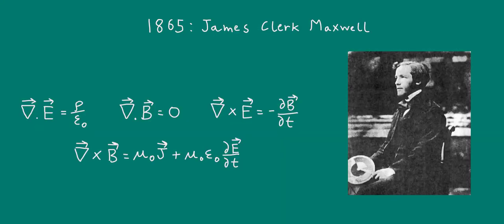By 1865, James Clerk Maxwell made a revolutionary breakthrough in physics, by unifying electricity and magnetism into a set of four equations that are now known as Maxwell's equations.